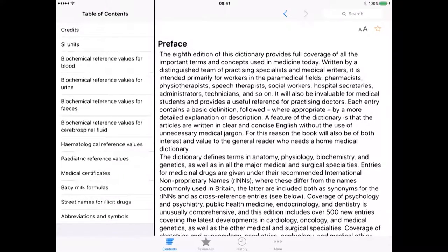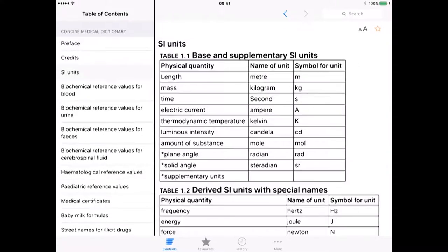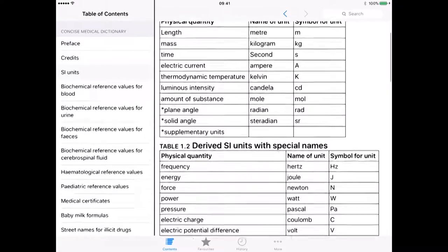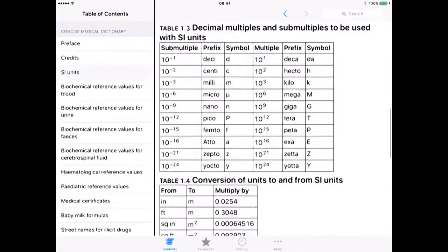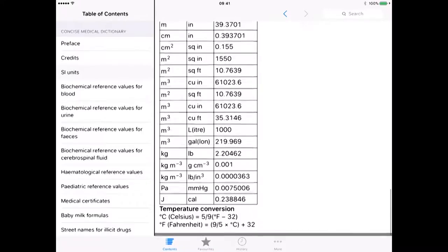If I want to go in and choose SI units, I can click that and it will bring up the information here, just in a very much a static kind of table.